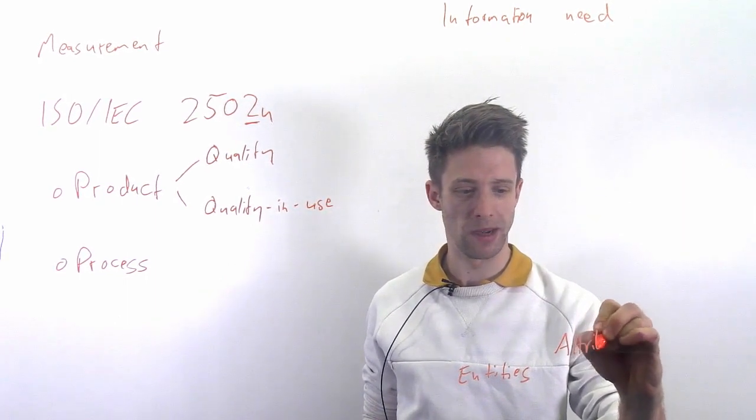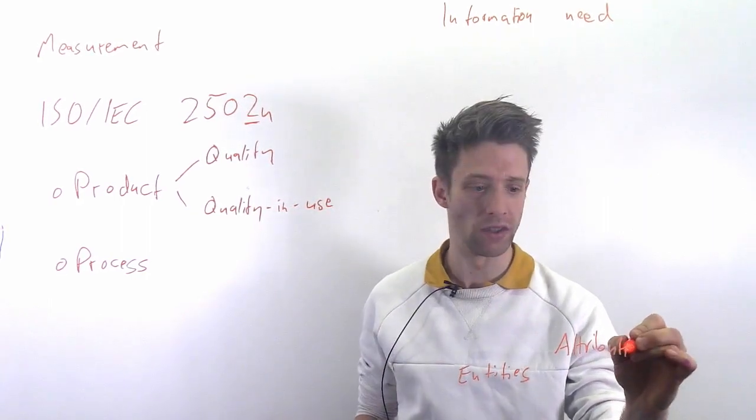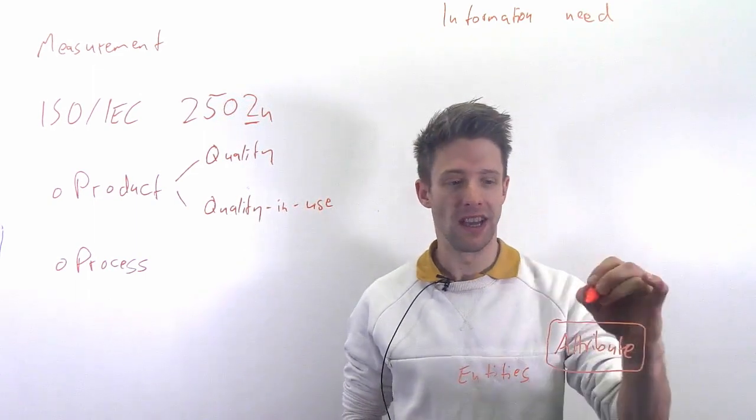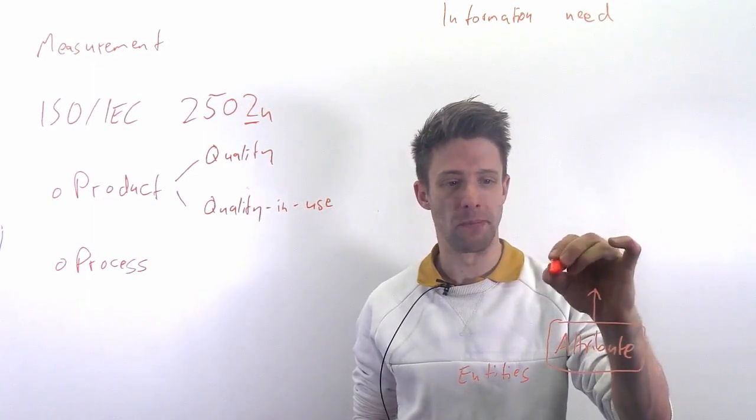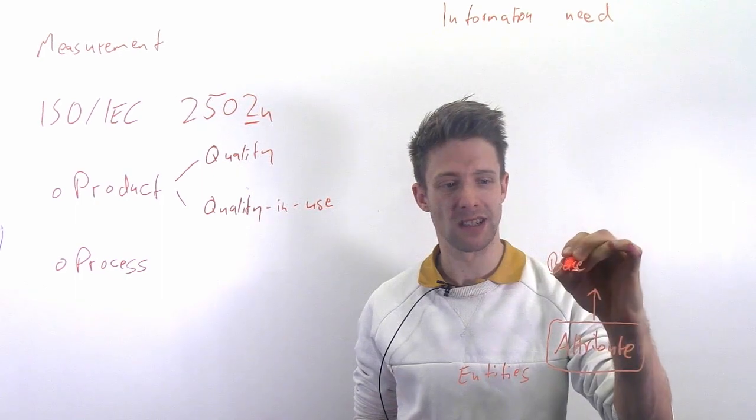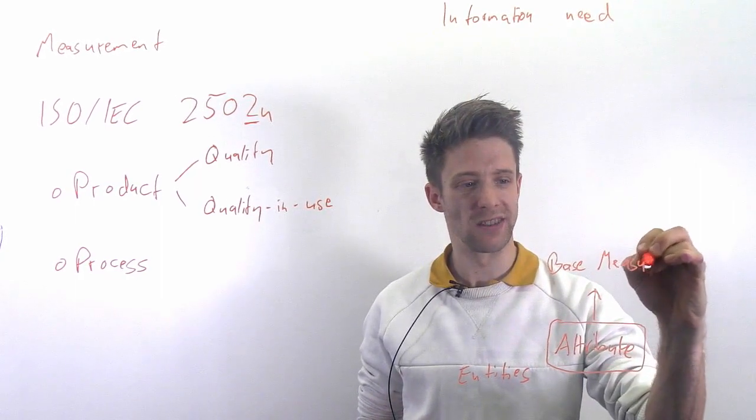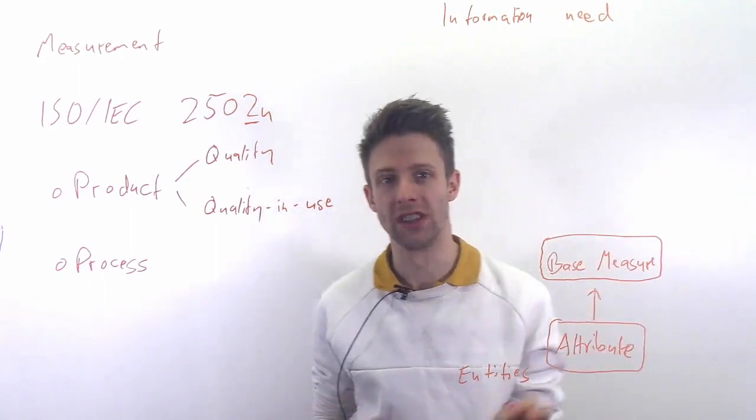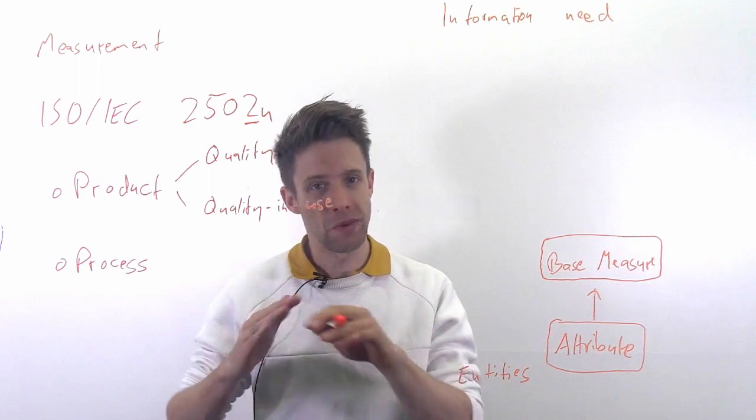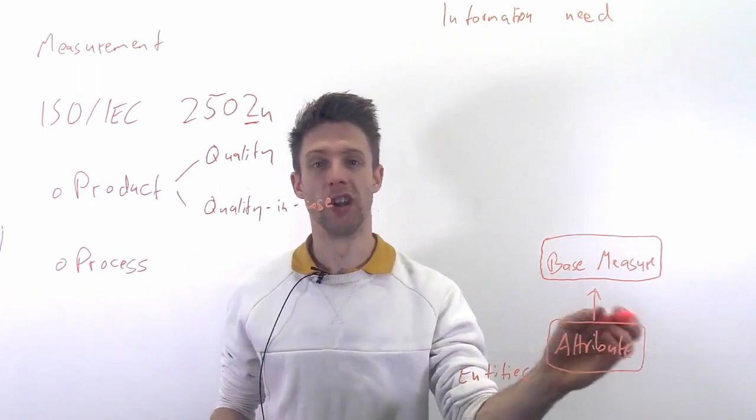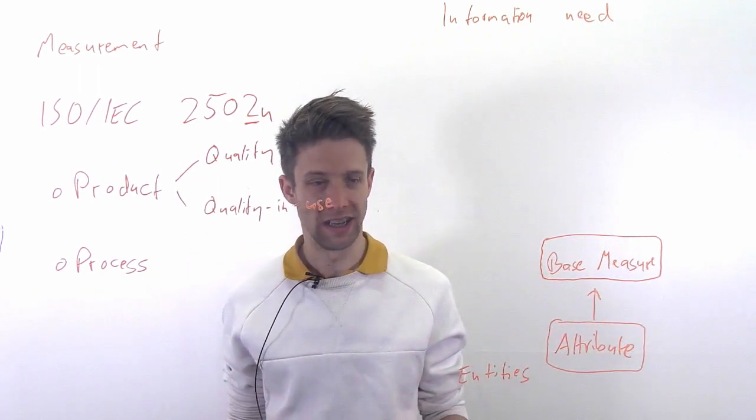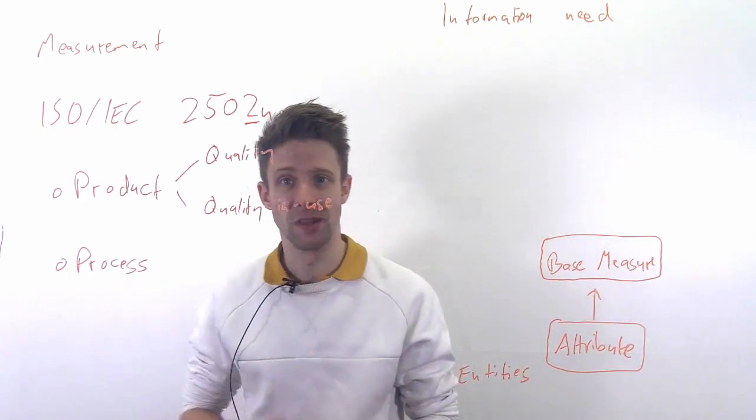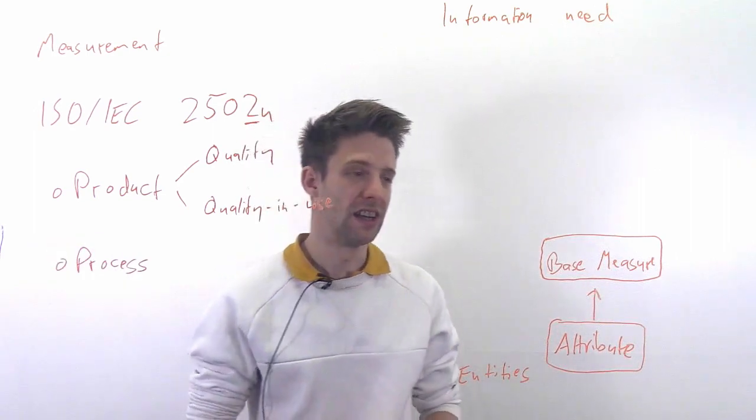And that is for instance, how secure is our software, or how many bugs are there? And on the lowest level you have your actual software product, you have the entities - for example classes, the code, different files. And the question is essentially how do you get from here to here? So how do you get your information need answered based on what you have? And what the standard calls this, down here are the attributes. So these are the attributes you want to measure. For example, what is the size of my code, how large is our product? That's something you can measure.